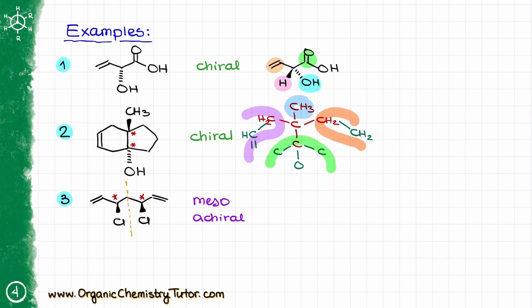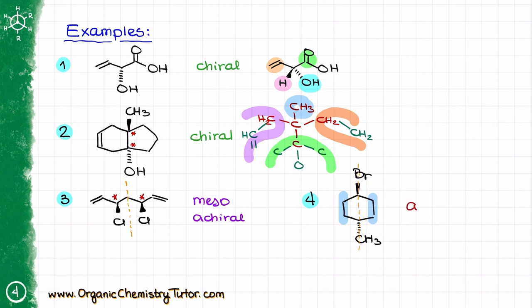Let's do one more. This molecule does not have any chiral carbons, because it has a plane of symmetry cutting it right in the middle, which means the right side and the left side of the cycle are absolutely identical. Because of that, we do not have any chiral atoms, and this is going to be just a regular achiral molecule — but not a meso compound, just a regular achiral one.